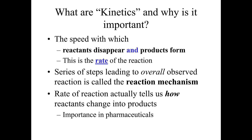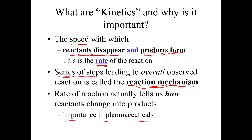We're thinking about the speed with which reactants disappear or the speed at which products form. From a study of the rate of reaction we can determine what steps go into a particular reaction. That list of steps is called the reaction mechanism — it's how the reaction takes place. If we understand how a reaction takes place we can actually speed it up or improve its yield, which ends up being important in pharmaceutical chemistry for example.